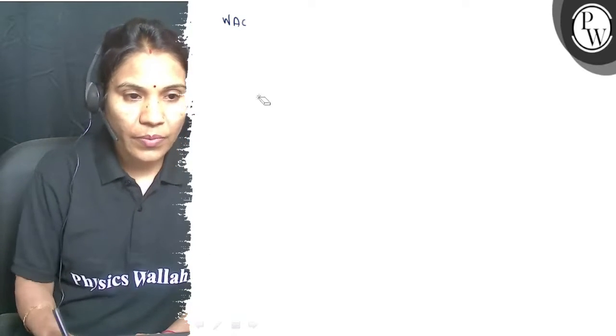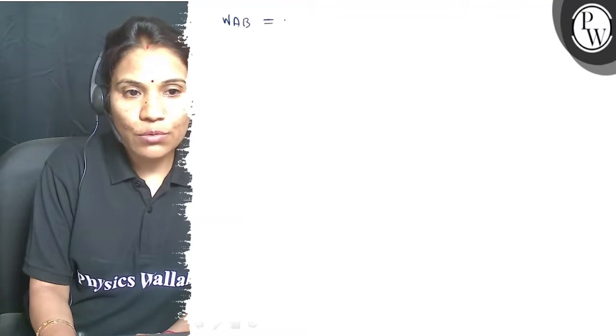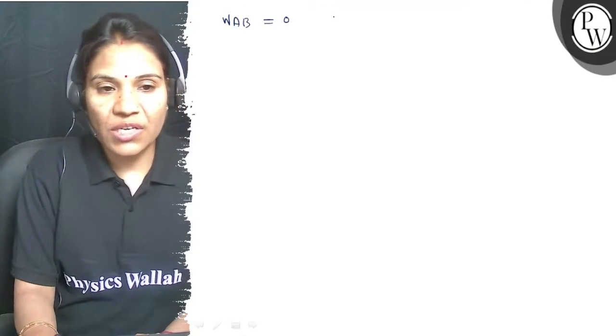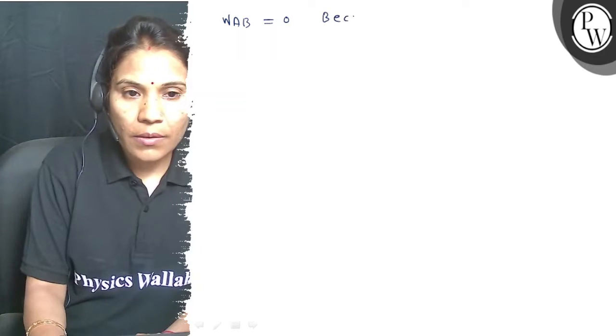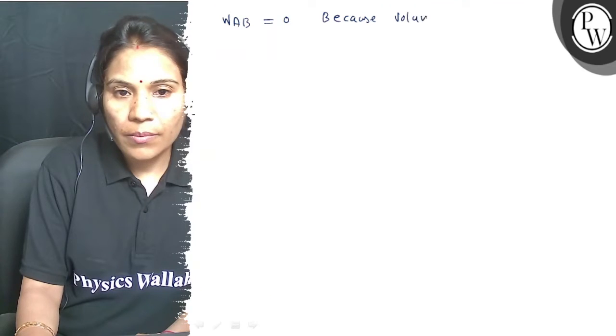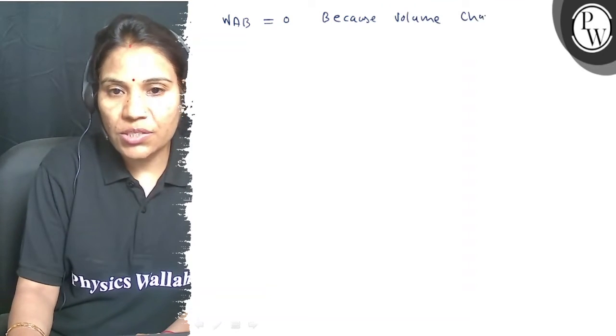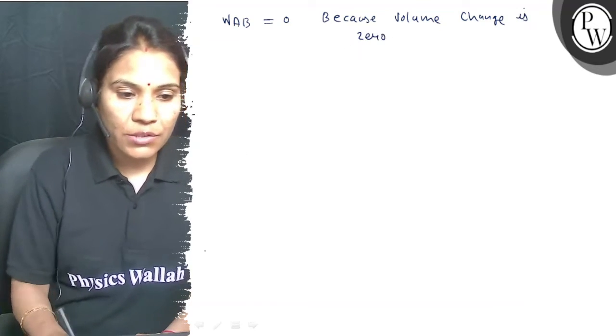Here W AB ki value 0 hogi because volume change is zero. Because volume change is zero.